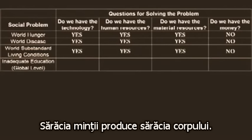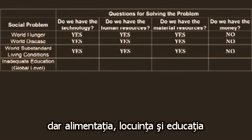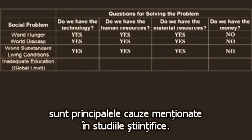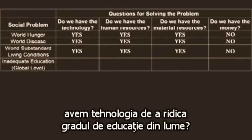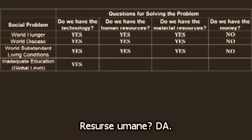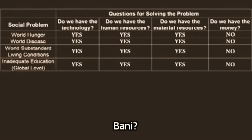I could add inadequate education to the list. After all, poverty of the mind leads to poverty of the body. Poverty in general is a nasty mix of several social problems. But food, disease, housing, and education are the primary drivers most cited in news and scientific studies. Do we have the tech to raise the education levels around the world? Yes. Human resources? Yes. Material resources? Yes. Money? No.